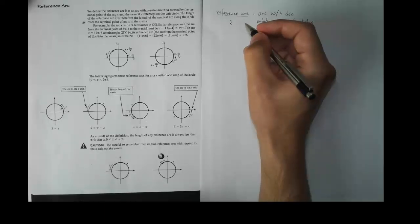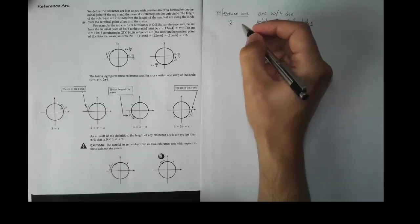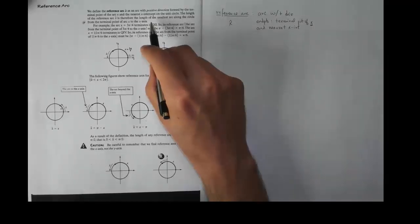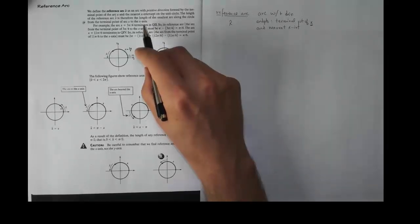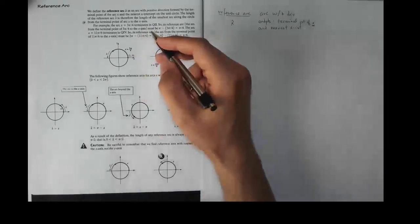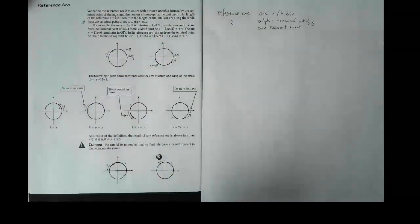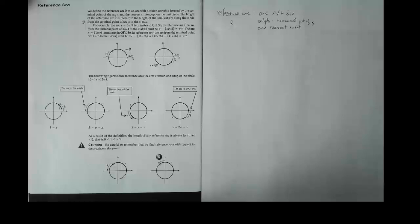The length of the reference arc x-hat is therefore the length of the smallest arc along the circle from the terminal point of x to the x-axis. I've already put a mark here because I didn't understand that the first time I read it. I still don't understand it now, so I'm going to have to take another look — but I see there are examples, so I'm going to try those.